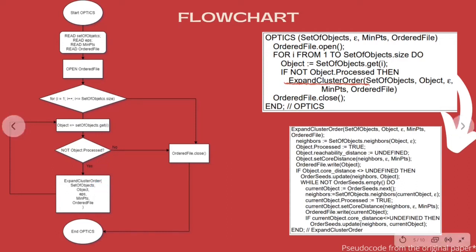This is achieved by calling an expandClusterOrder function, which is right here. This is the expandClusterOrder function, and we call it right here. It's all this block of code, which is not included in this flowchart because this is only the main loop. The expandClusterOrder function receives as parameters the set of objects, the object in question, epsilon, the minimum of points, and the ordered file.